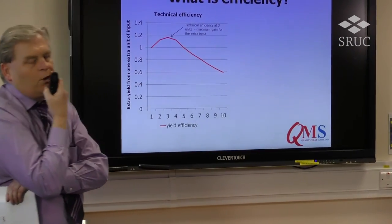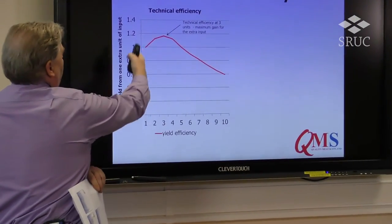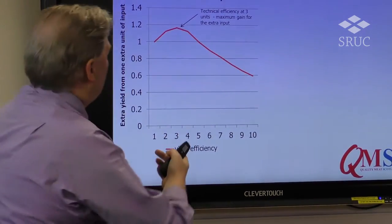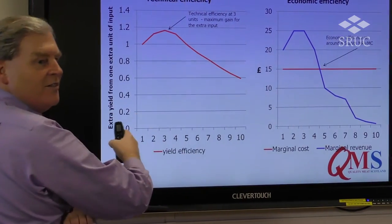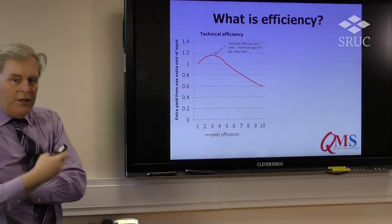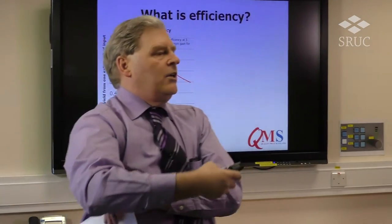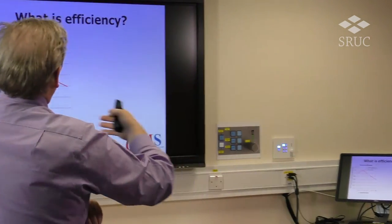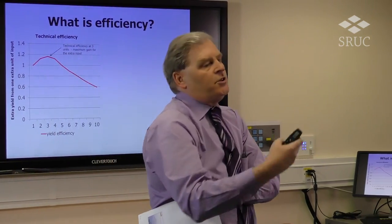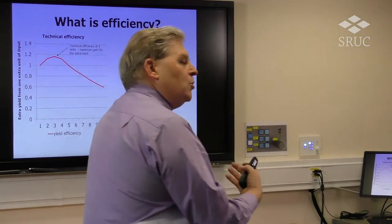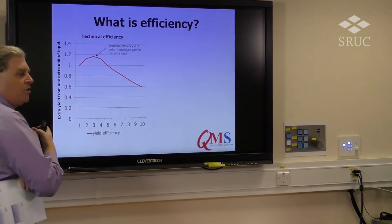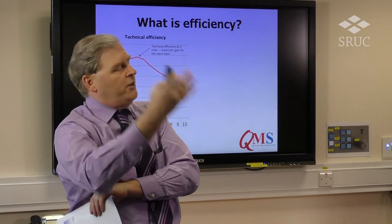Now we can look at something called technical efficiency. All I've done on this chart is plot the extra amount of output you get for putting in one extra unit of input. Over the first three moves, for each extra unit of input I'm putting in, I'm getting a bigger response. Once I've gone past three, the response starts to tail away. So the most technically efficient point in this profile is three units — that's where I get the maximum benefit from adding an extra unit.